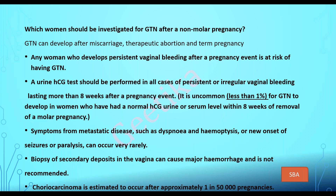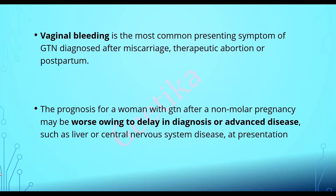Choriocarcinoma is estimated to occur in one in 50,000 pregnancies. Vaginal bleeding is the most common symptom of GTN developing after miscarriage, therapeutic abortion, or postpartum hemorrhage. The prognosis of women with GTN after non-molar pregnancy may be worse owing to delay in diagnosis. We routinely follow molar pregnancies, so prognosis there is good. Whereas in any other pregnancy event we may miss the developing GTN, leading to delay in diagnosis and worse prognosis.